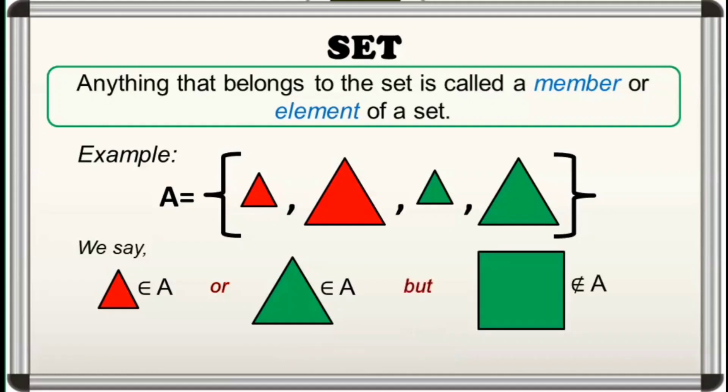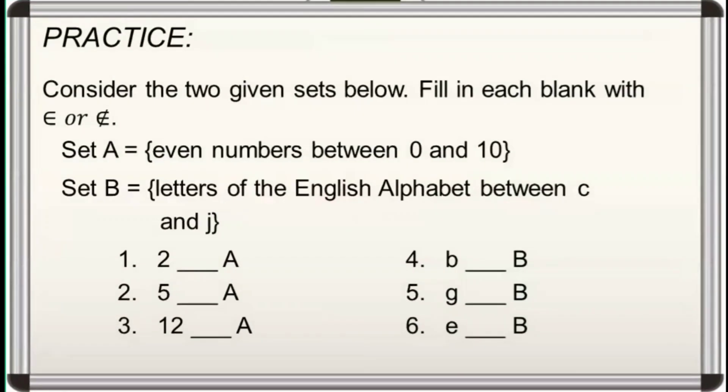But this shape is not an element of A. We just put a slash to indicate that the given object is not an element of the set. Let's try on this. Consider the two given sets below. Fill in each blank with the symbol epsilon or slash epsilon.